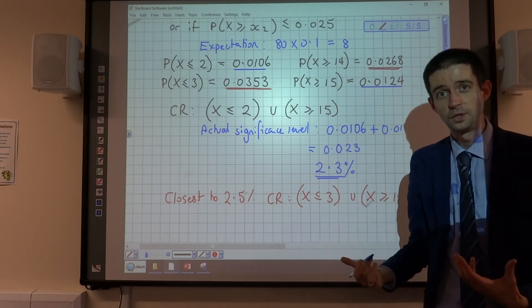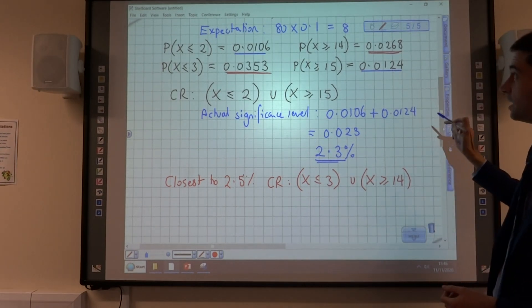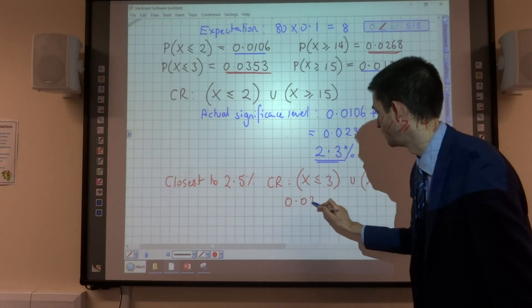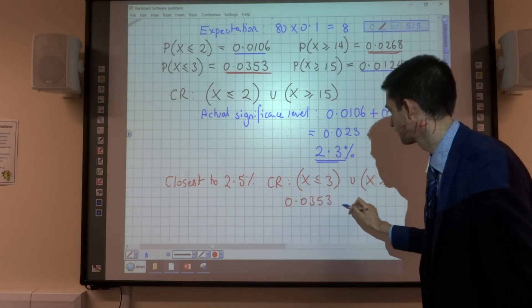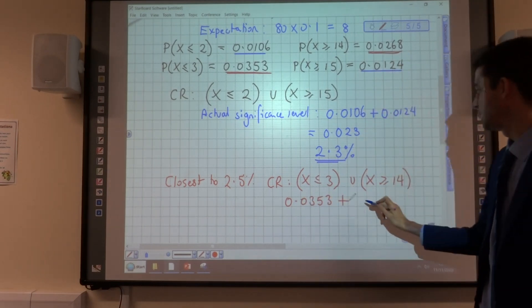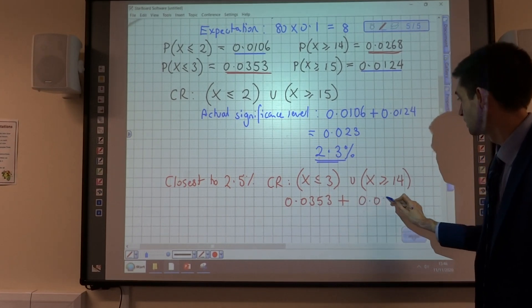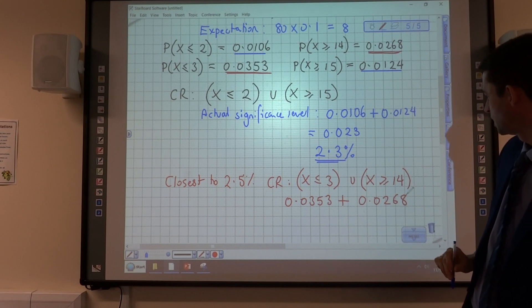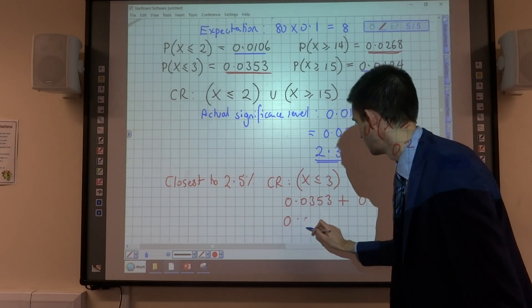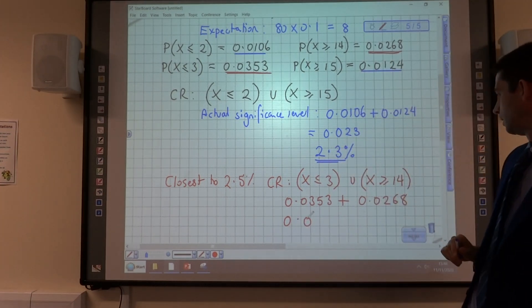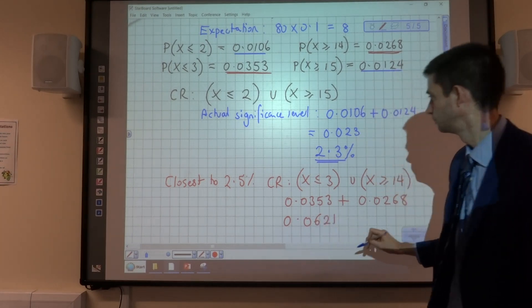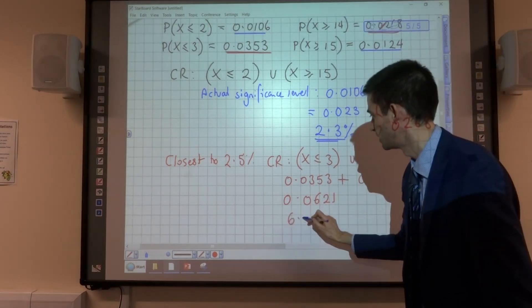And the actual significance level of this test would be the probability of this, which is 0.0353, plus the actual probability here, 0.0268, which is going to be 0.0621. So, 6.21%.